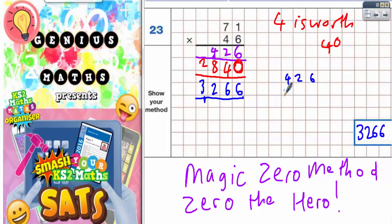And they get the 284 underneath the 426. And then they realize that they've forgotten the magic zero, so they try to put the magic zero in on the end. But that will not work.